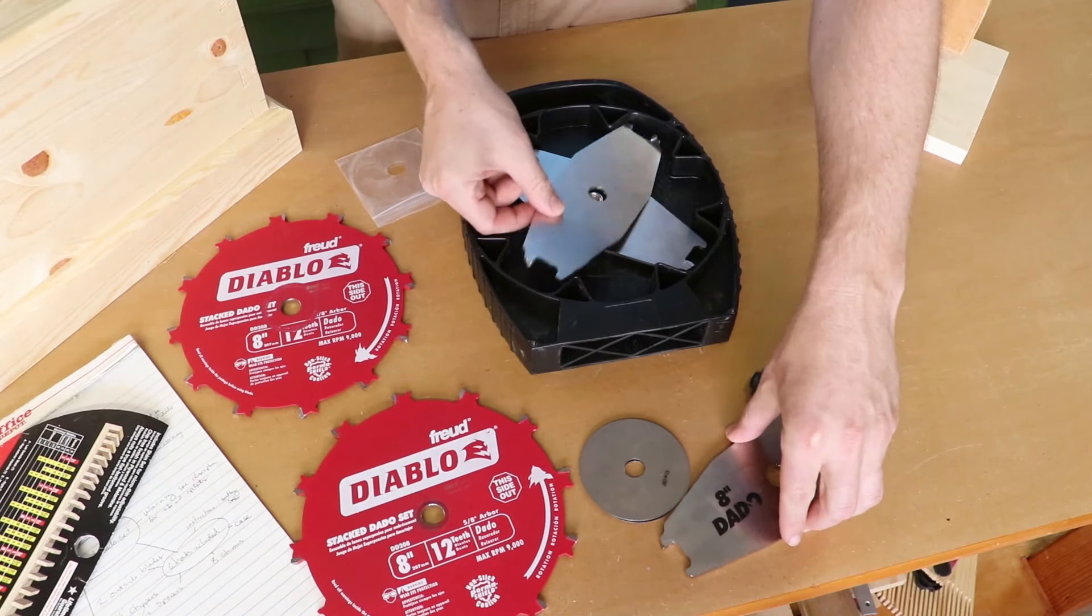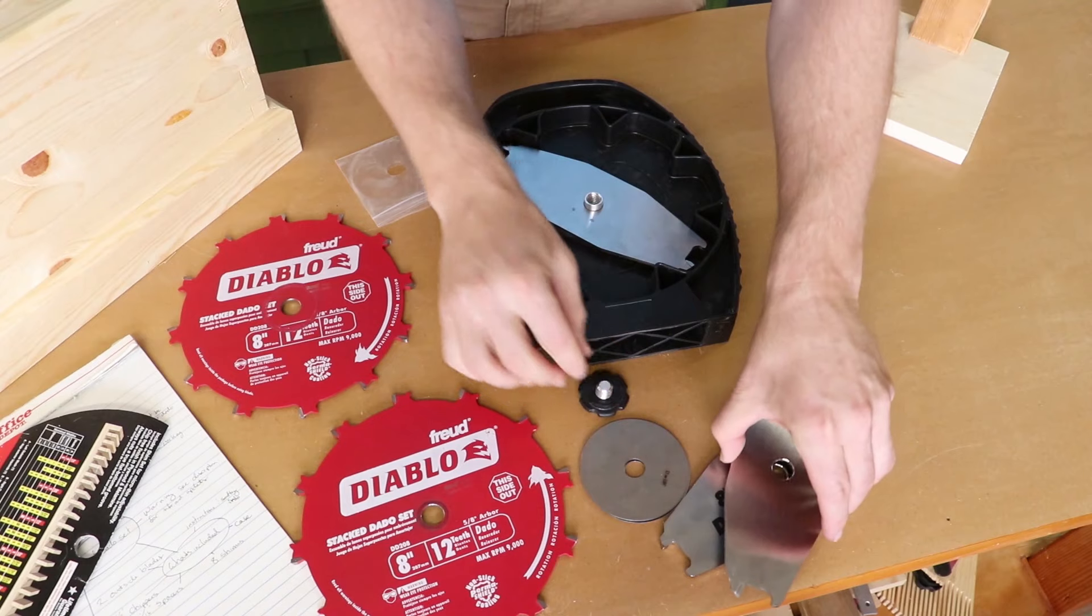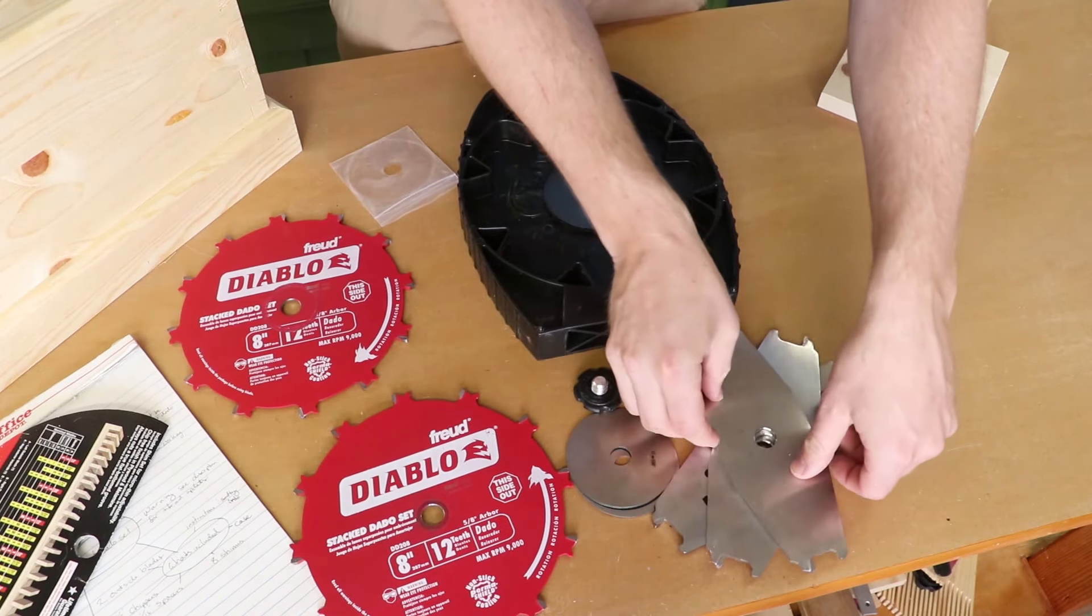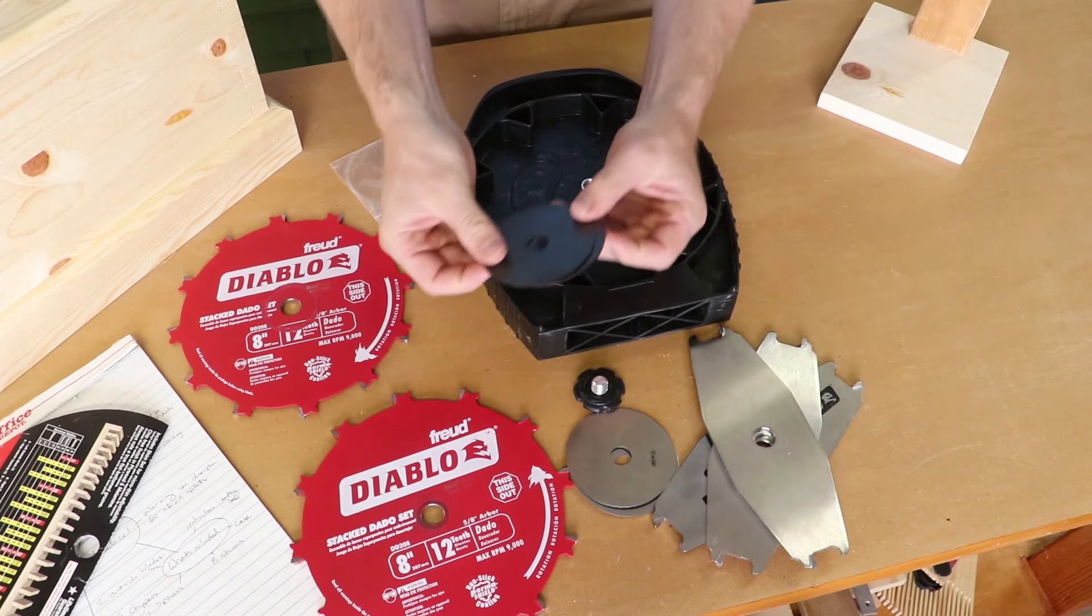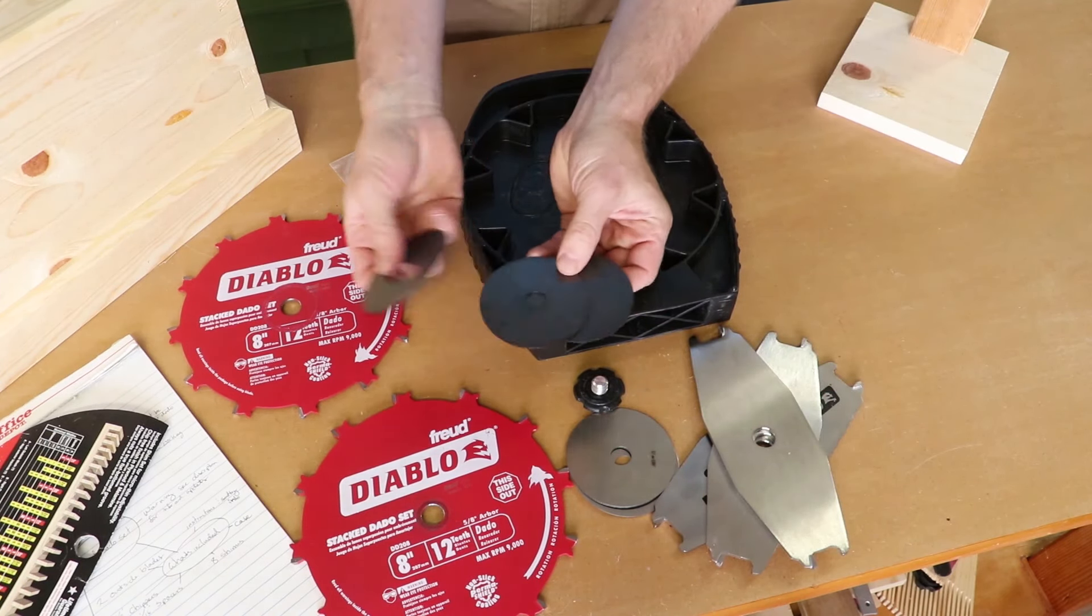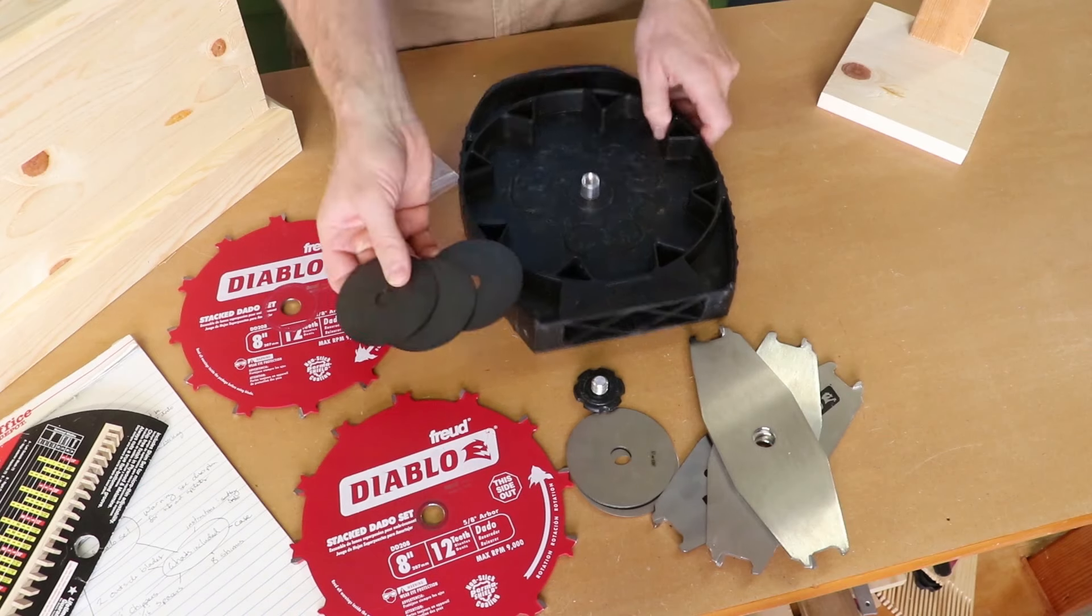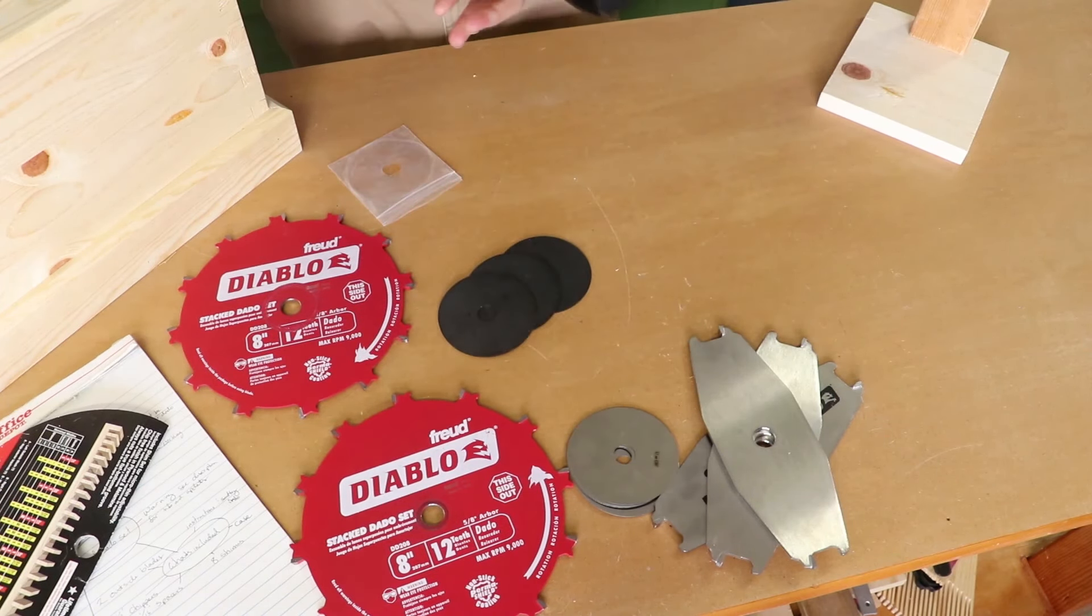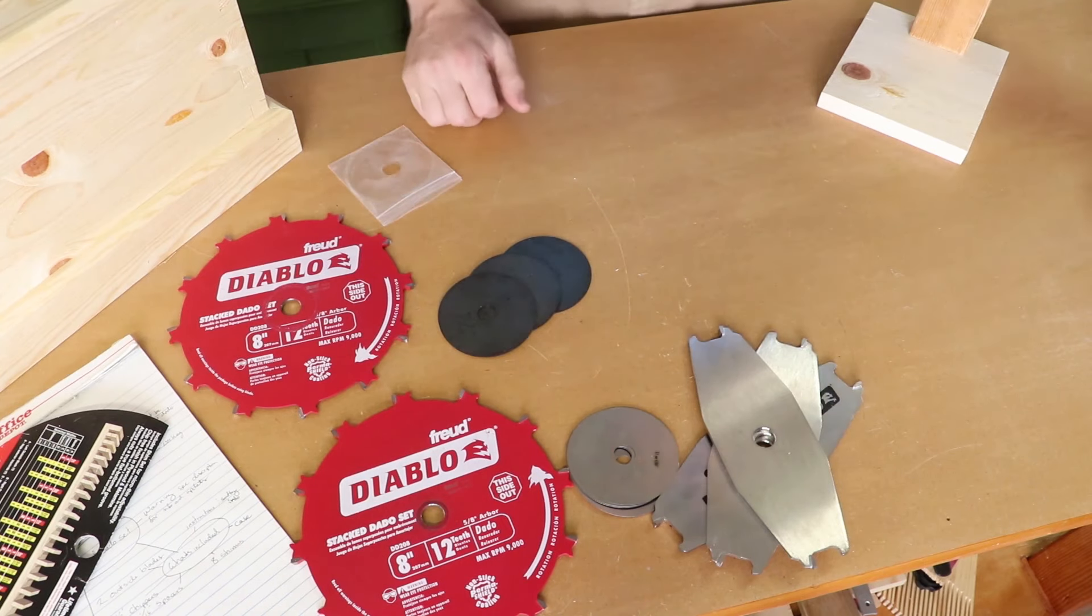They're an eighth of an inch wide. And that eighth of an inch helps make that dado that much wider. And here are the spacers. They are a sixteenth of an inch. As I said, you can get three of them. So with all of these combined, we can make up to seven-eighths inch wide dados.